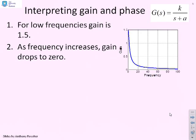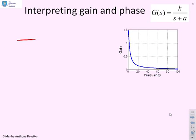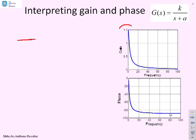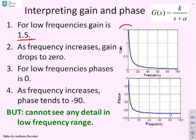Looking at the gain plot first: for low frequencies the gain is 1.5, and as frequency increases the gain drops to zero. For the phase at low frequencies, using the cursor, you can see it is zero, and as frequency increases the phase tends to minus 90 degrees. One thing to notice is that it's quite difficult to see detailed information in the low frequency range, and we'll return to that discussion later.